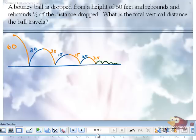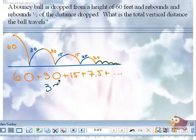Putting things together in orange here, we have 60 plus 30 plus 15 plus 7.5 and so on. And in purple, we have 30 (the rebounds) plus 15 plus 7.5 and so on.